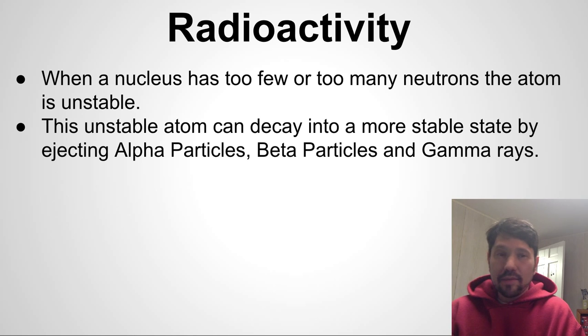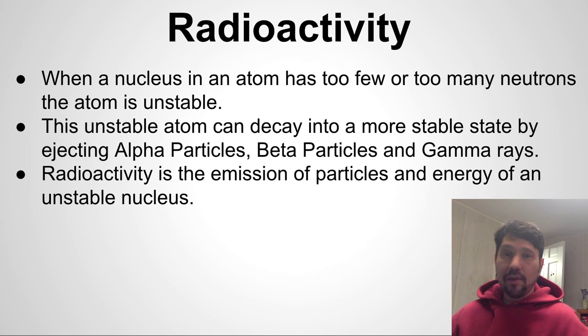Radioactivity occurs when a nucleus has too few or too many neutrons, and in that condition the atom is unstable. This unstable atom can decay into a more stable state by ejecting alpha particles, or ejecting beta particles, or ejecting gamma rays. Those are our three forms of radioactive decay.